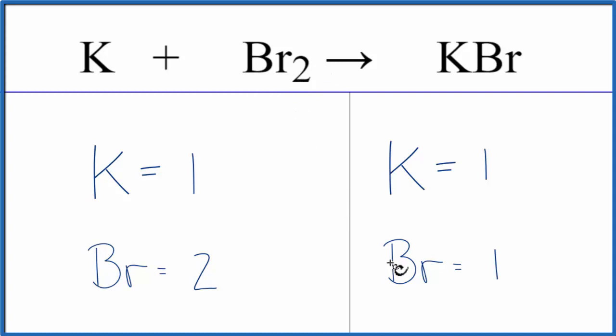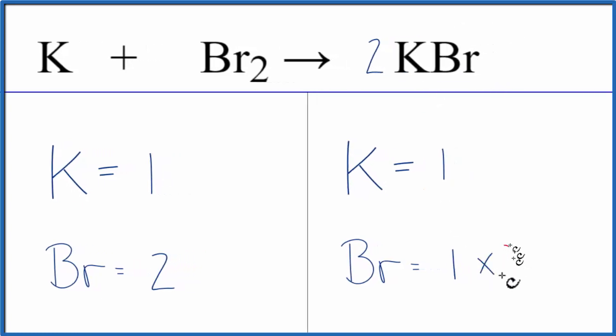So it looks like we have two Brs here and just one here. If we put a two in front of the KBr, this two applies to everything, to the K and to the Br. If I had one Br times that two, that would give me two Brs. Those would be balanced.